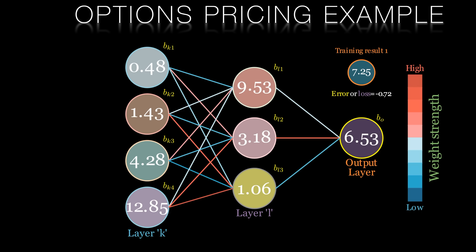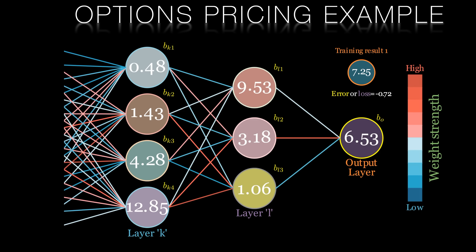We'll continue this process all the way back to our input layer. Increases to the biases in layer K will push up the activations, as will changes to the weights connecting these neurons to the previous hidden layer. This is where the backpropagation term comes from — the error or loss cascades back through the network from the output layer through all the weights and biases of the previous hidden layers, all the way back to the input layer.